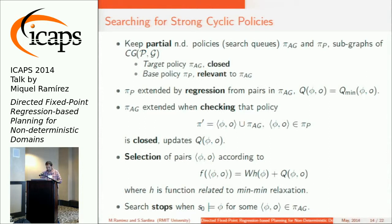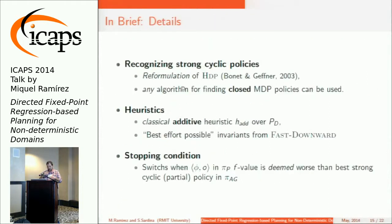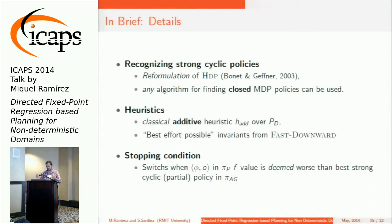The search stops whenever we find the initial state. For recognition of strong cyclic policies, we reformulated the HDP algorithm by Bonet and Geffner (2003) for computing closed MVP policies. We observe that in principle any algorithm could be used. As a heuristic we use the additive heuristic over the all-outcomes determinization; it only needs to be computed once because we are doing regression. We also use fast-forward invariants to get mutexes and rule out states not reachable from the initial state.